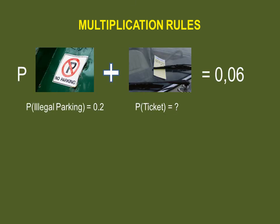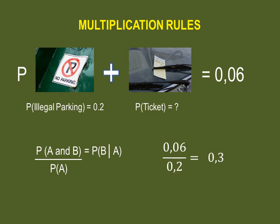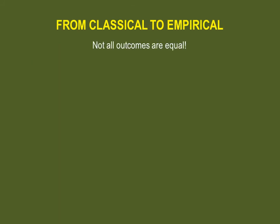Let's do an example. Coming late into Bishops in the morning, your probability of having to park illegally is 0.2, and your probability of having to park and getting a ticket is 0.06. What's the probability of getting a ticket if you're actually parked illegally? We have the probability of both events, and the probability of event A, which is parking illegally. Dividing 0.06 by 0.2 gives you a probability of getting a ticket of 0.3.